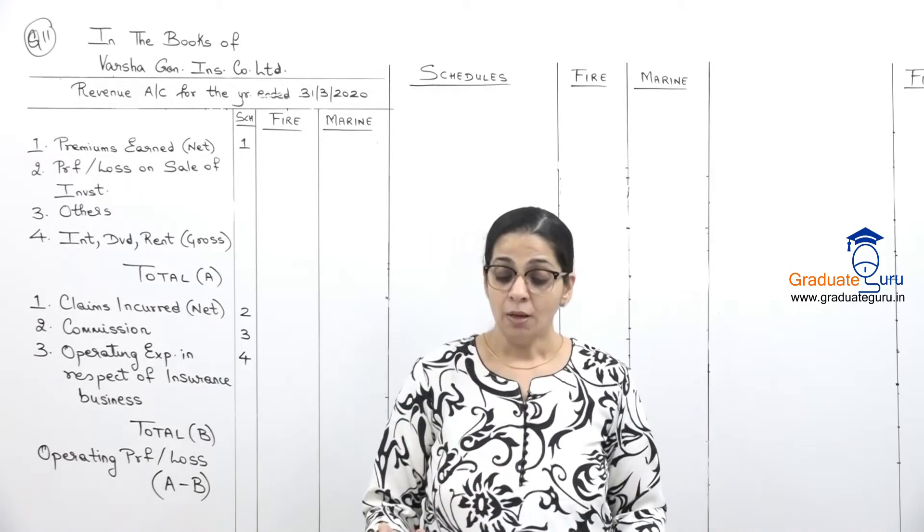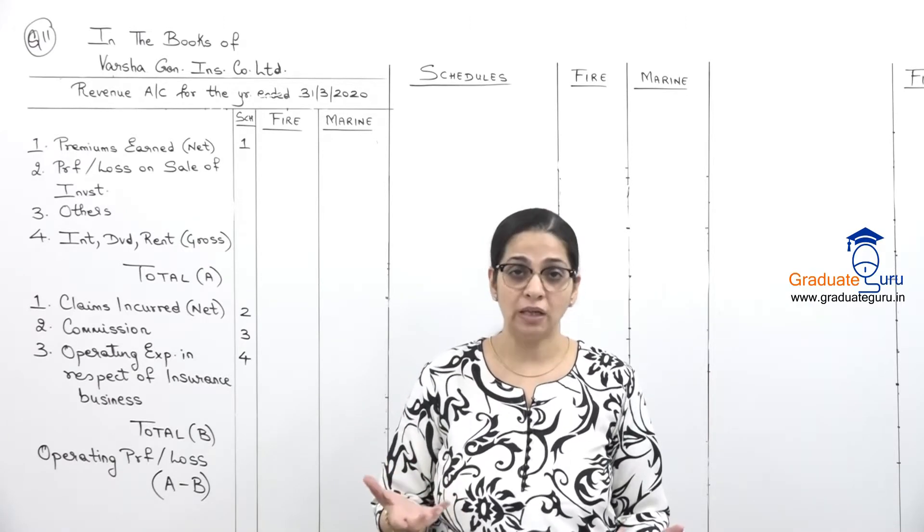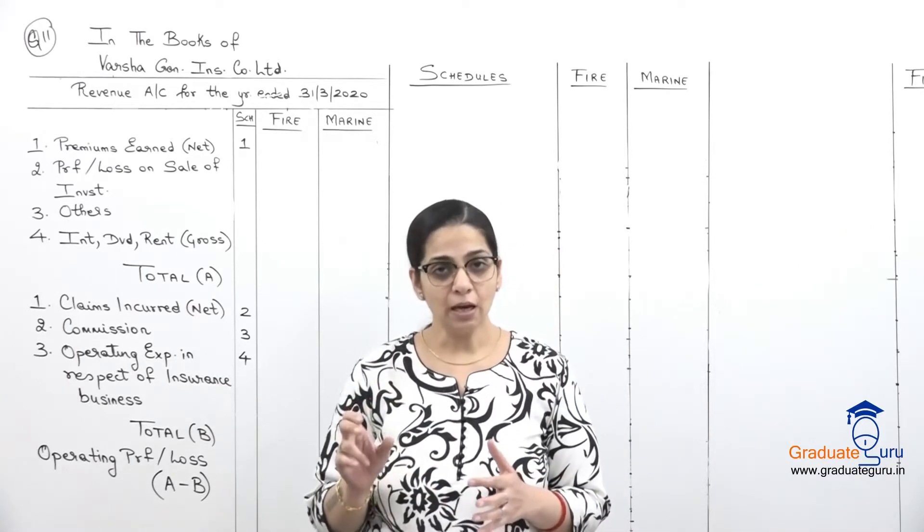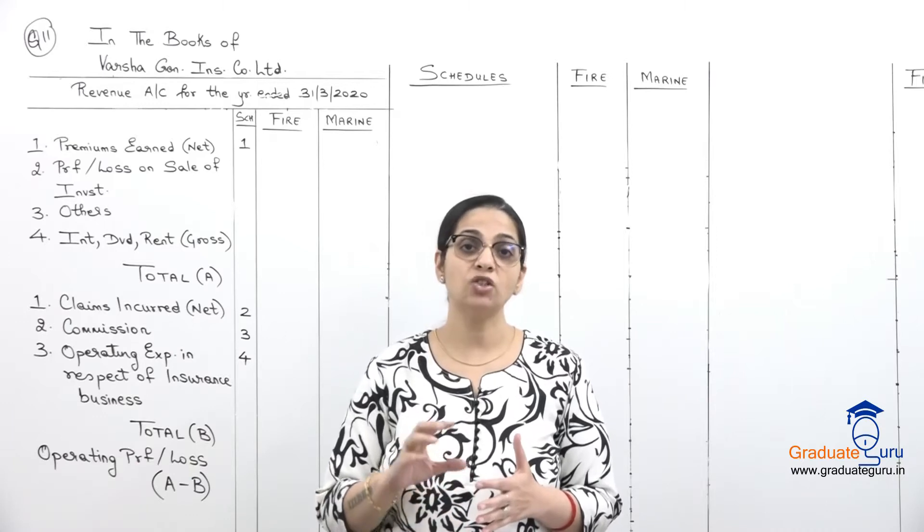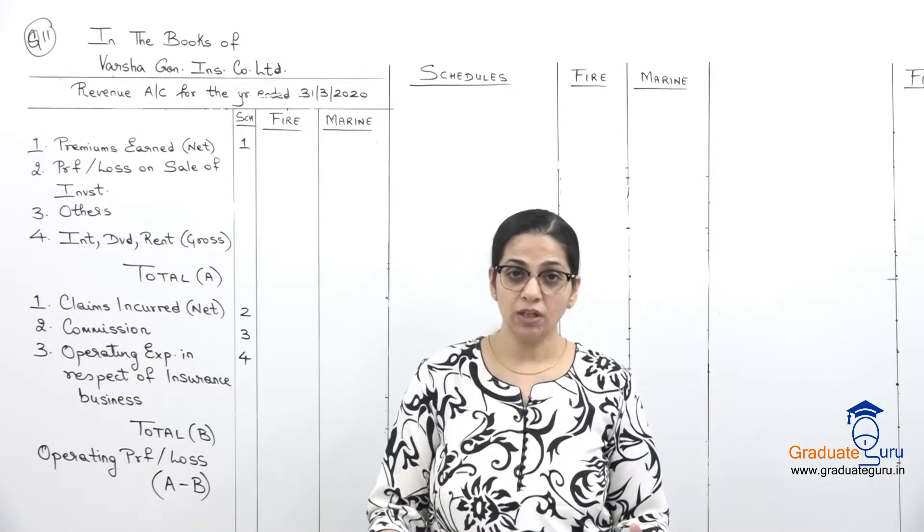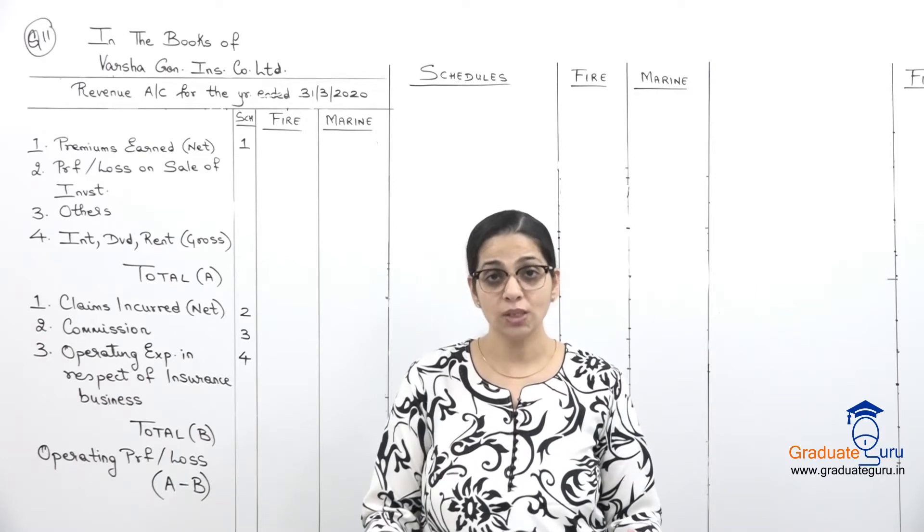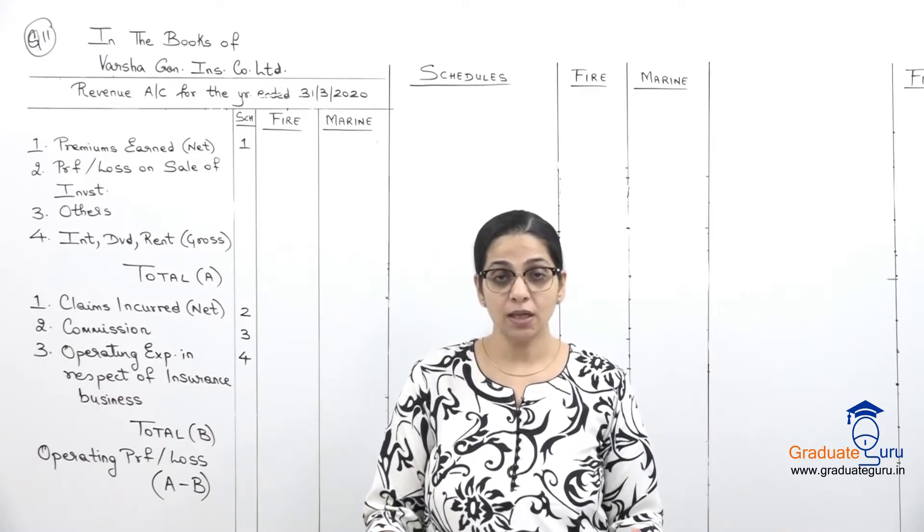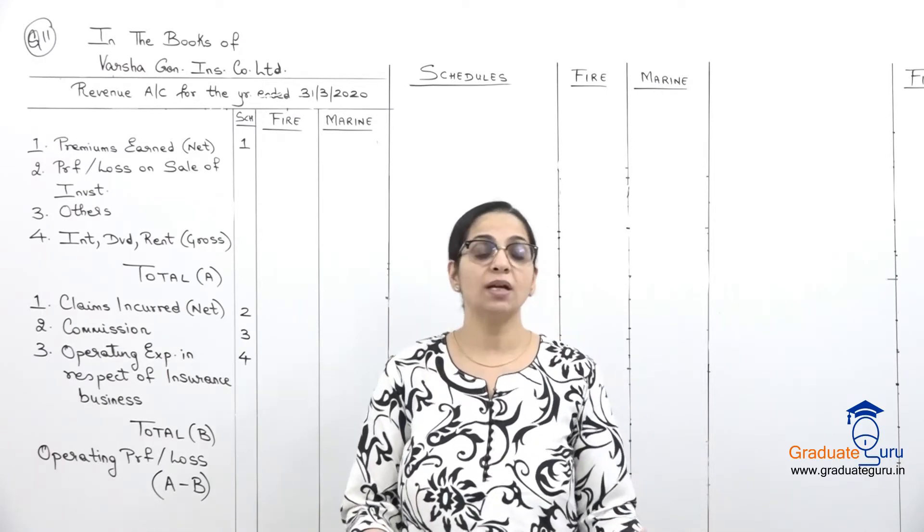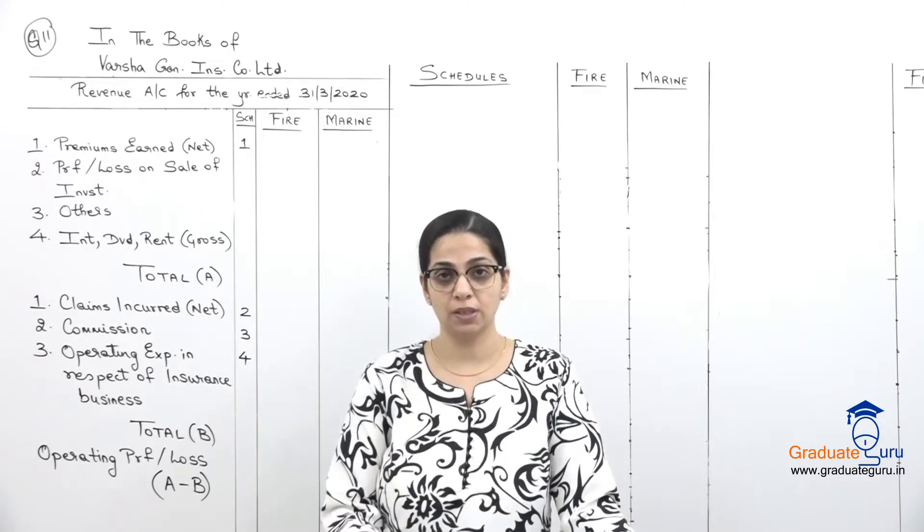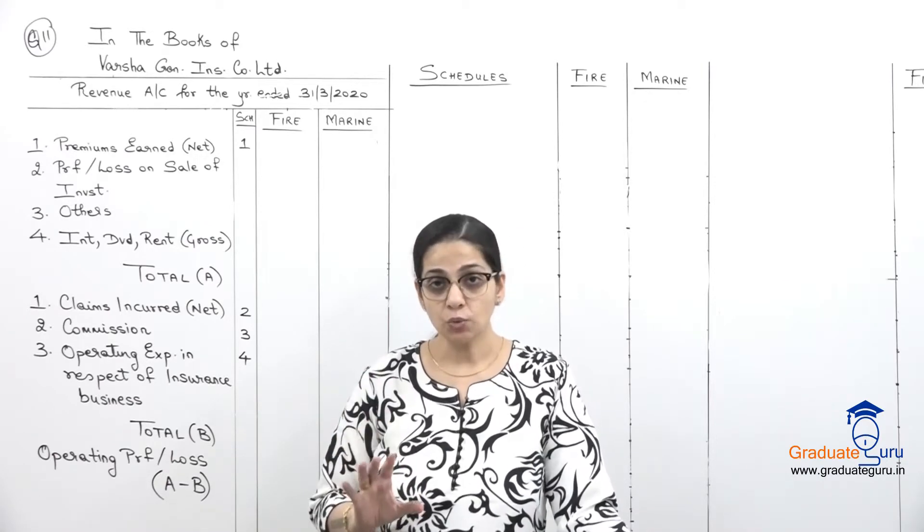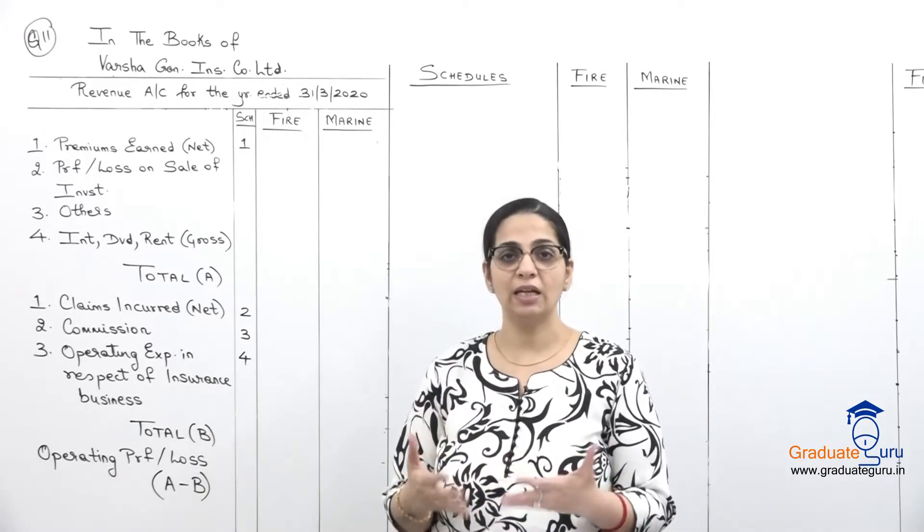Then they have given us for fire department, outstanding claims, claims paid and outstanding claims on 31st March. Same way for marine department all these things are given. Commission paid is given separately for fire and marine. Then we have additional reserve, which is only for fire. Finally we have premium received.